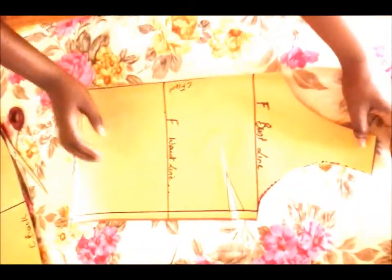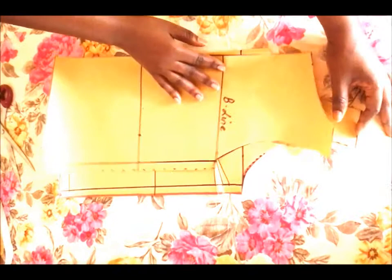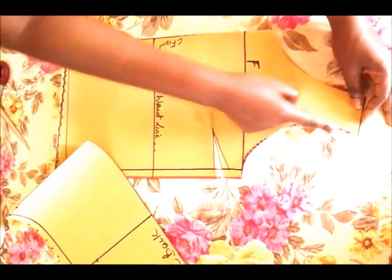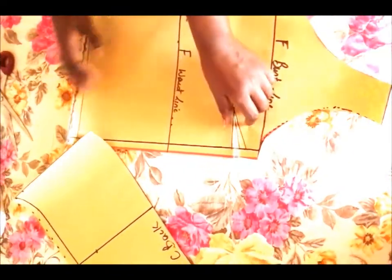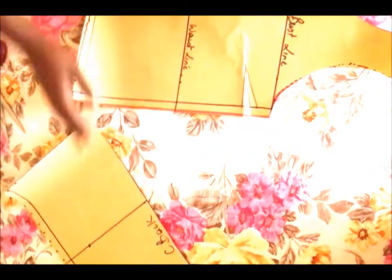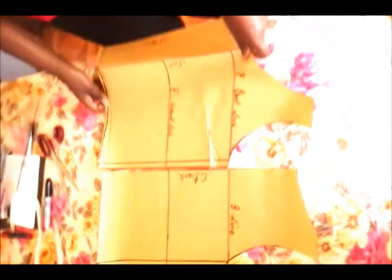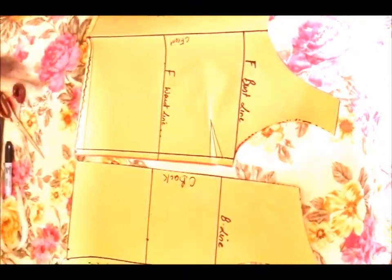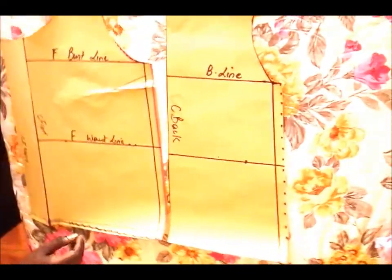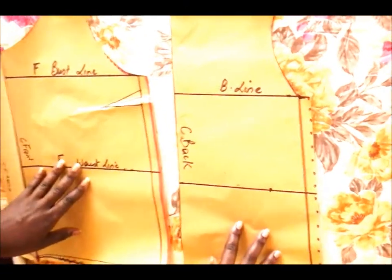And we have the shoulders that match up with the back shoulders. We have our darts and everything. So, all we need to do now is pretty much cut out our pattern and make a simple tank top. Now, let's go.